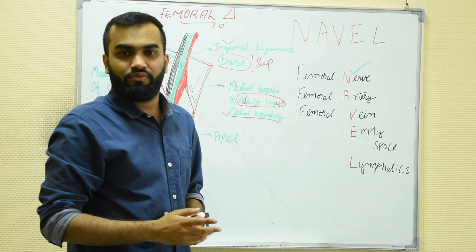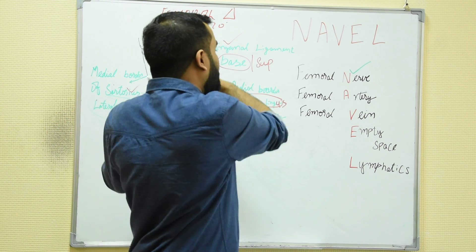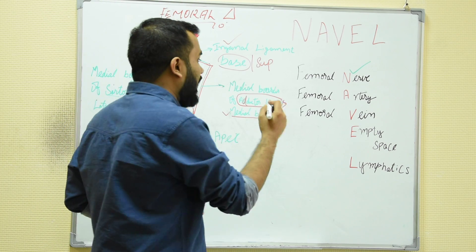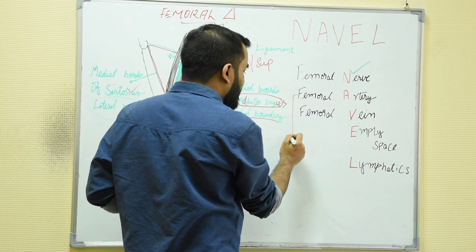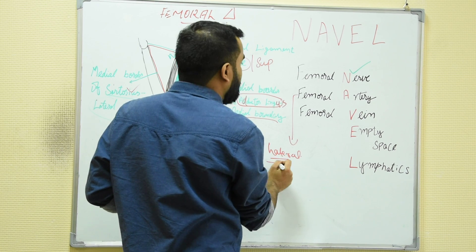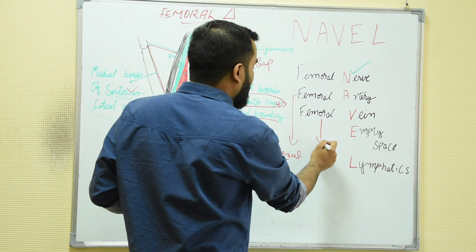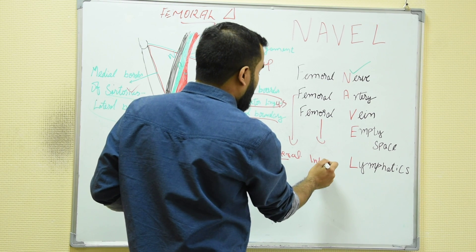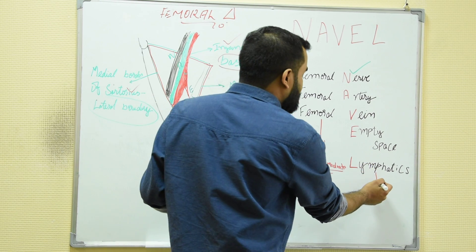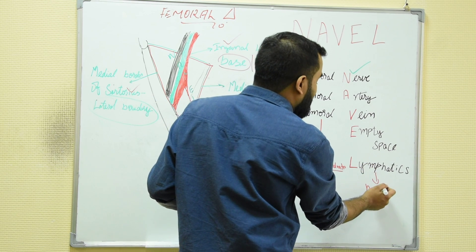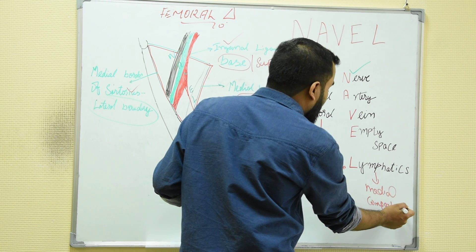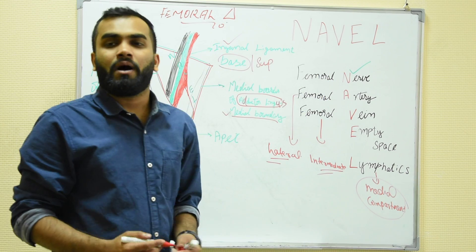Inside the femoral triangle there are some compartments. The artery is in the lateral compartment — remember, artery is in the lateral compartment. The vein is in the intermediate compartment, and the lymphatics are in the medial compartment.